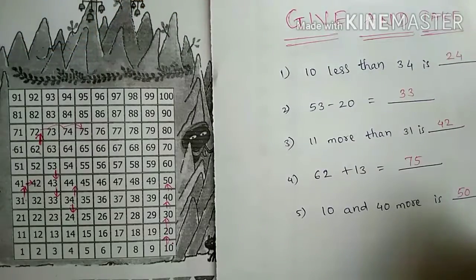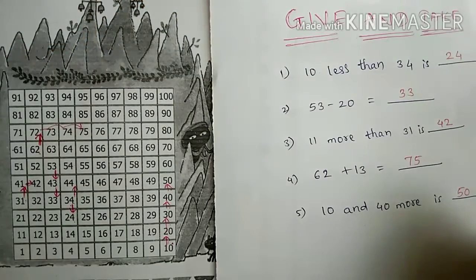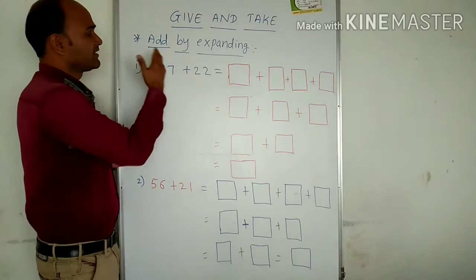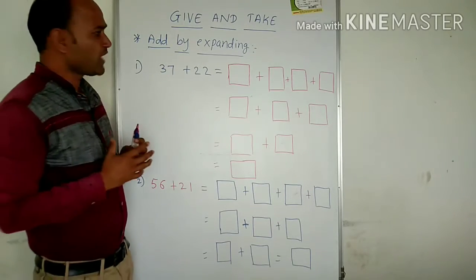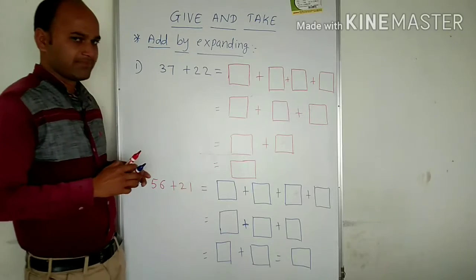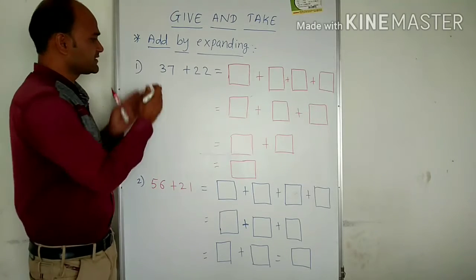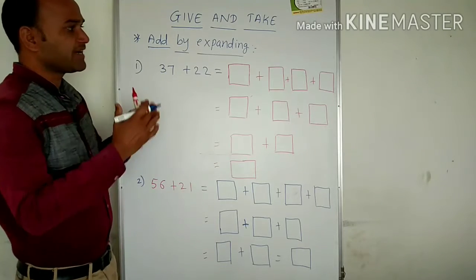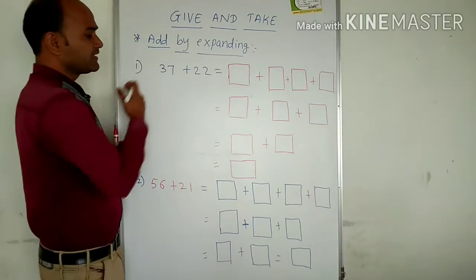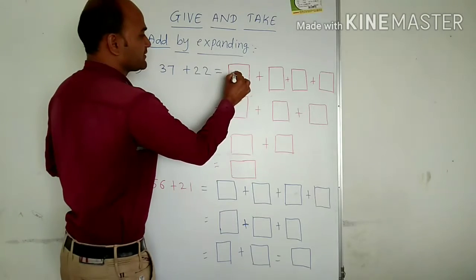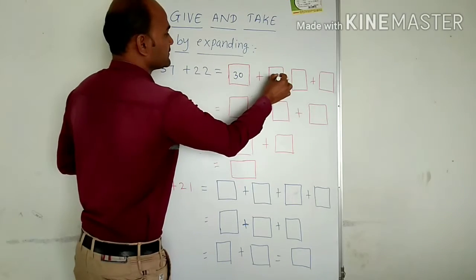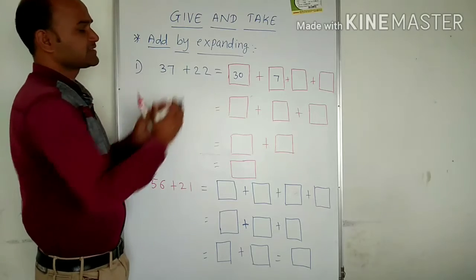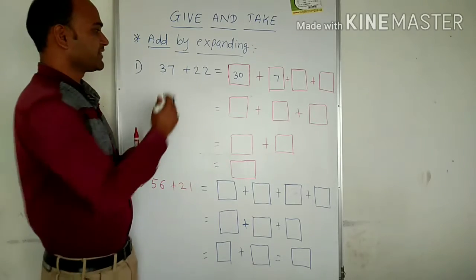Next we are going to discuss adding by expanding — how to add numbers by expanding them. Let us look at the first example: 37 added to 22. We expand 37 as 30 plus 7, and we expand 22 as 20 plus 2.